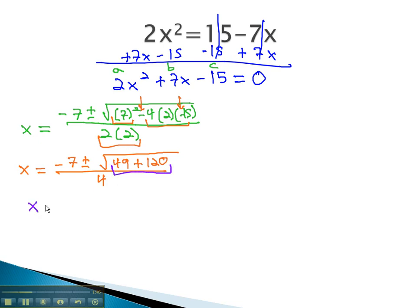Adding inside the radical, we find that x is equal to negative 7, plus or minus the square root of 169, over 4. The square root of 169 is 13, so we have negative 7 plus or minus 13 over 4.